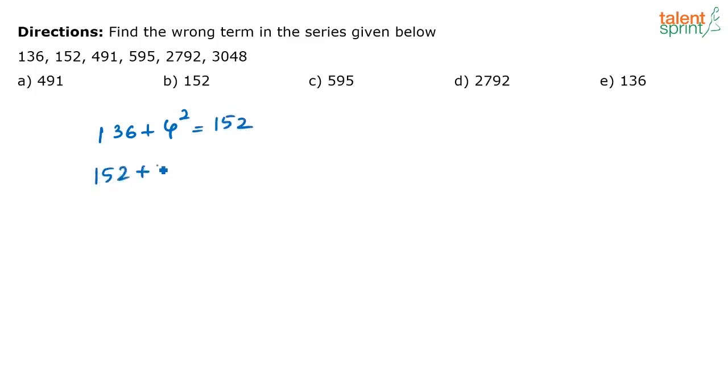152 plus 7 cube, right? 4 plus 3 is 7. So that is equal to 495. Now next one will be 495 plus 10 squared. I am doing plus 3 here. 4 plus 3 is 10. So next will be again plus 3 and you will have 13 cube. Then you will have plus 3, 16 squared.